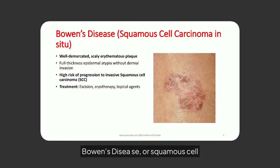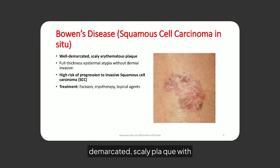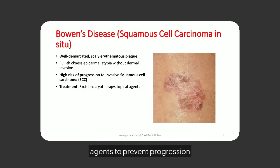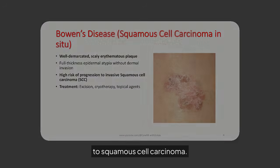Bowen's disease, or squamous cell carcinoma in situ, is a well-demarcated, scaly plaque with a high risk of becoming invasive. Treatment options include excision, cryotherapy, and topical agents to prevent progression to squamous cell carcinoma.